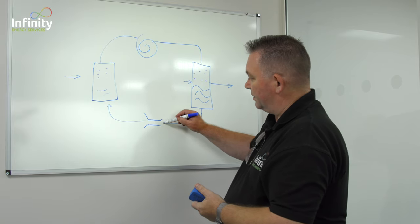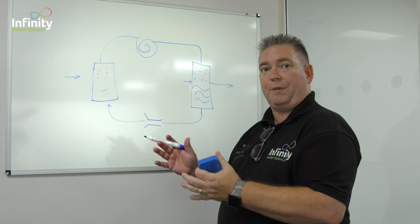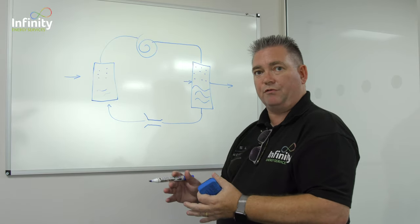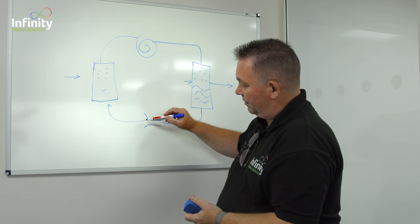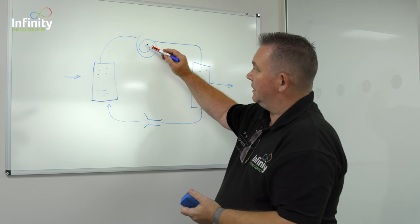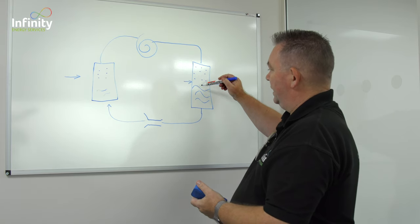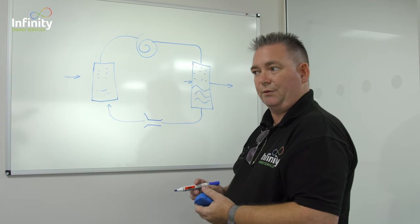Now at the bottom goes into the expansion vessel or expansion valve and that expands the refrigerant and when you expand the refrigerant the temperature plummets. So it's gone from a low pressure liquid into a low pressure gas into a high pressure gas into a high pressure liquid and then back to a low pressure liquid again.